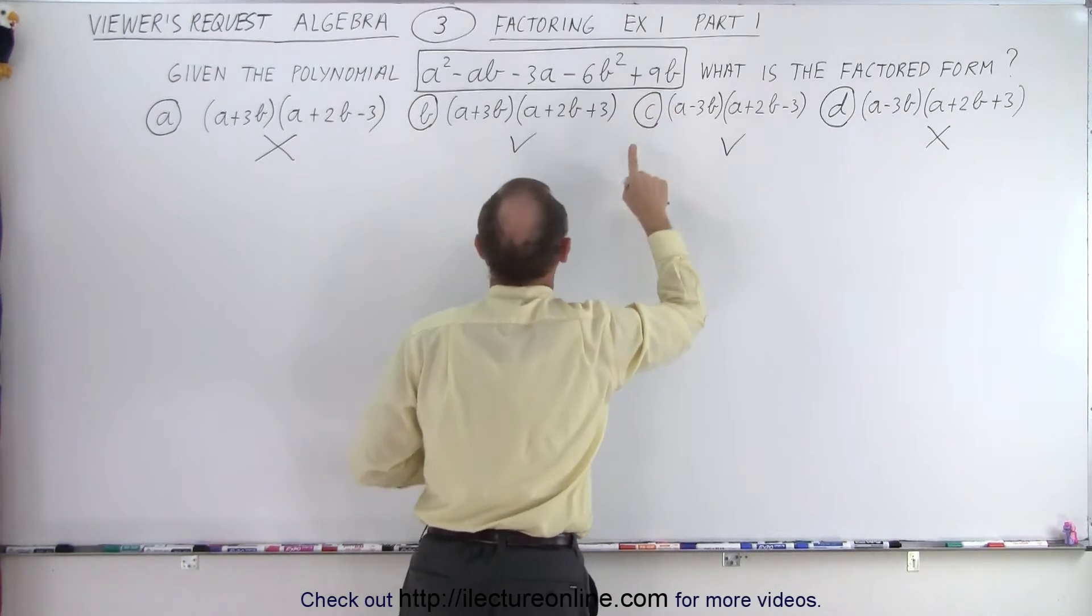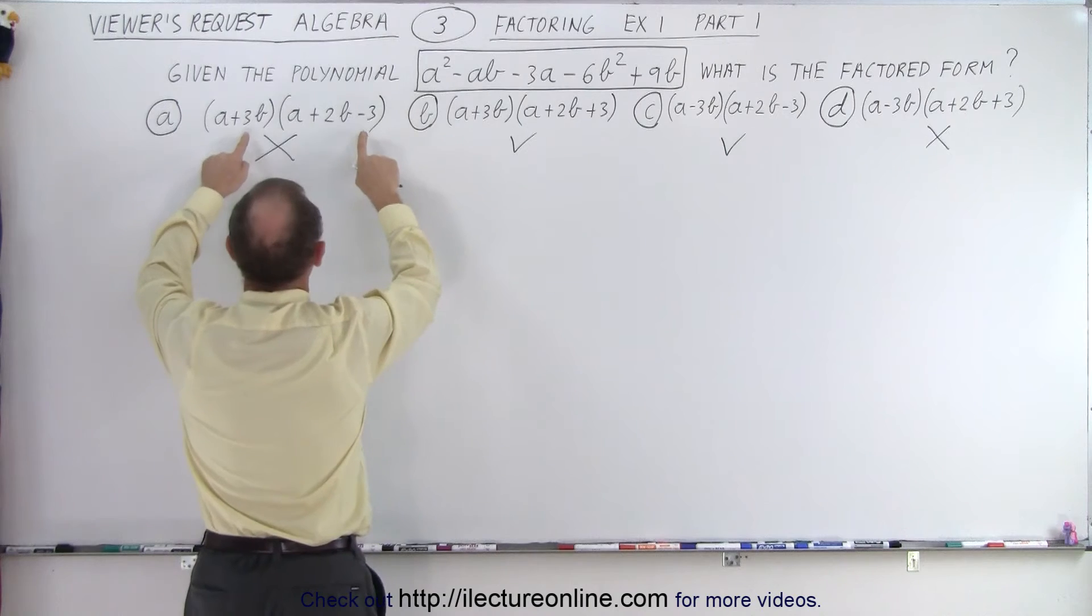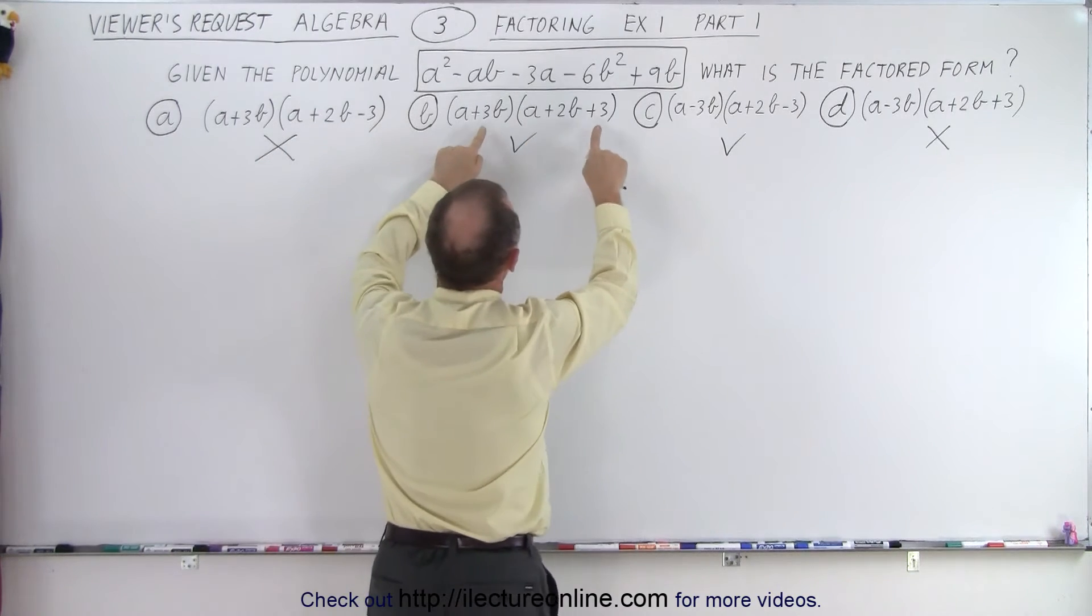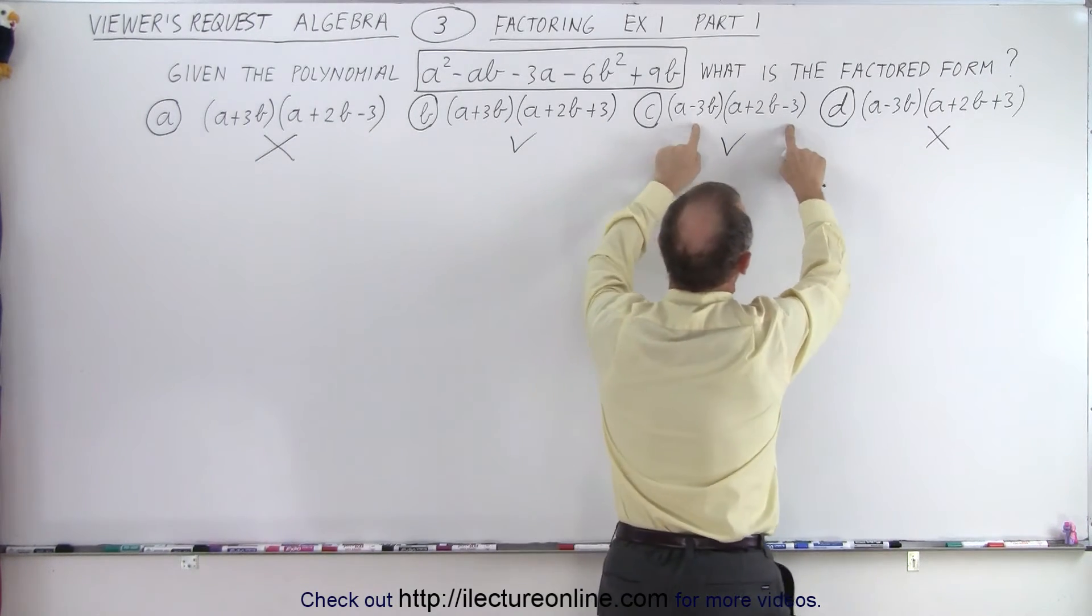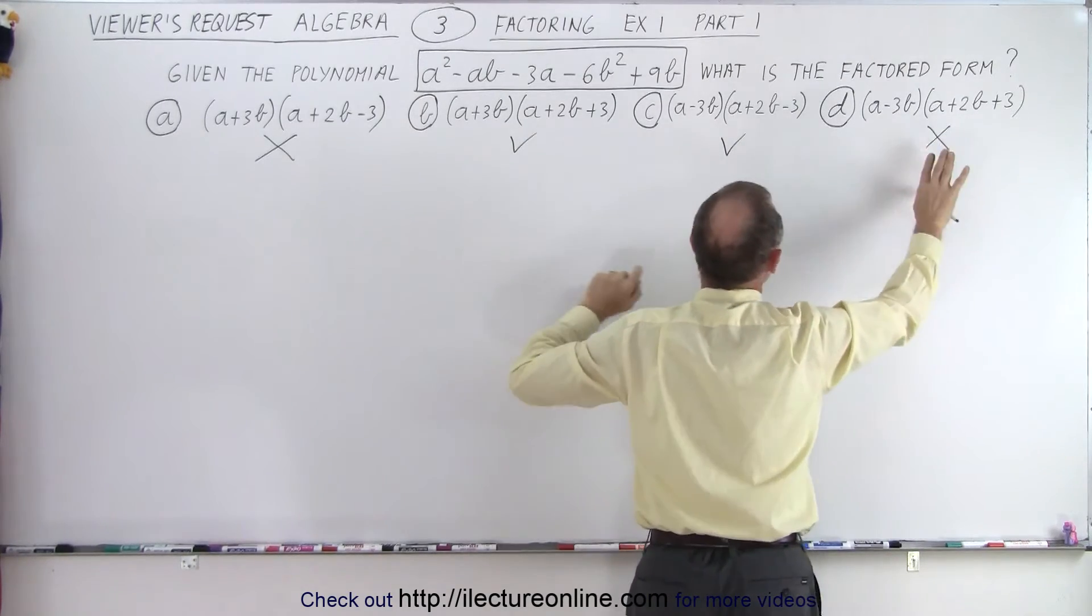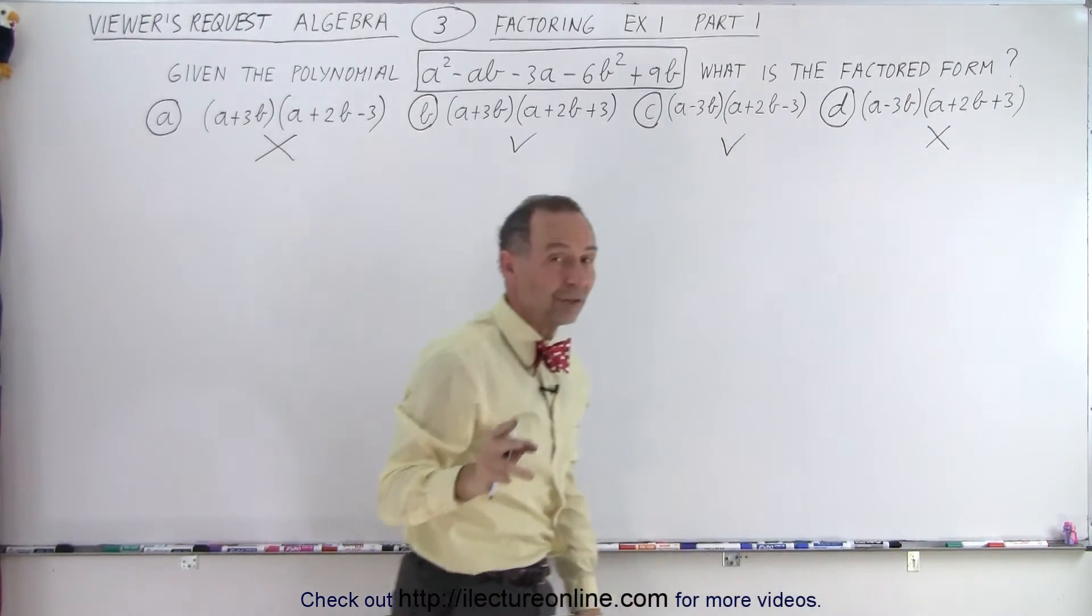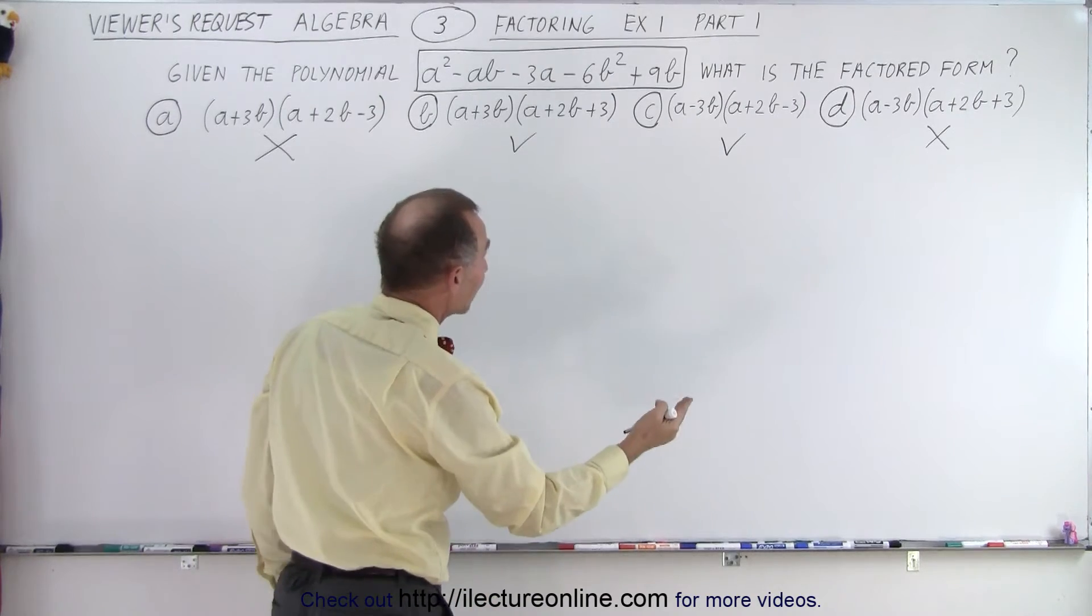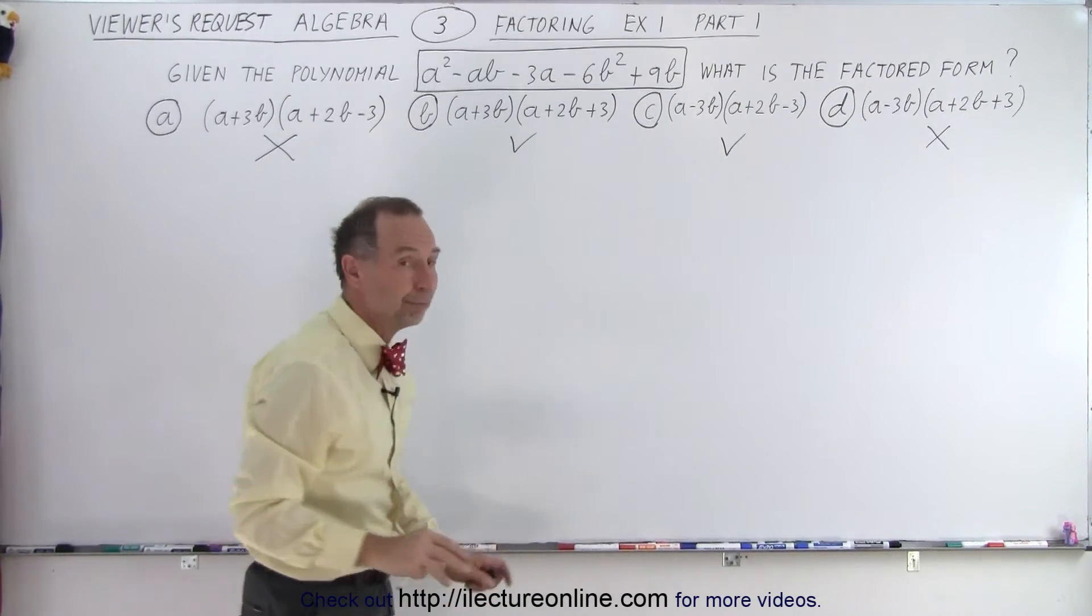So by just looking at the last term and the only way I can get that is by multiplying these two together, I realize now that A and D do not give me the right result. They give me a negative 9b instead of a positive 9b, so that eliminates two of the answers.